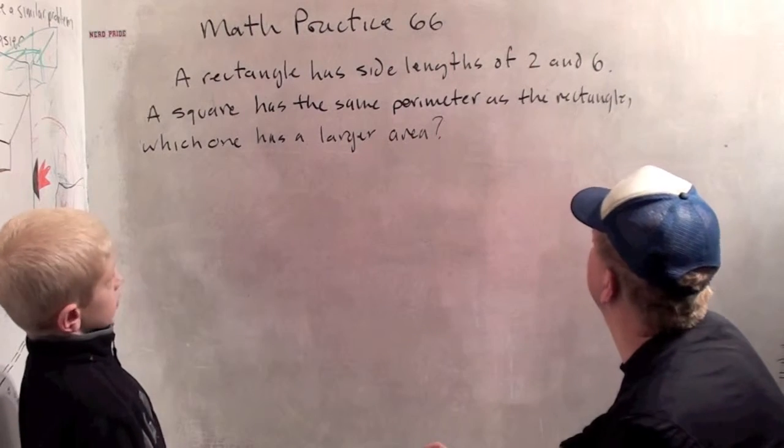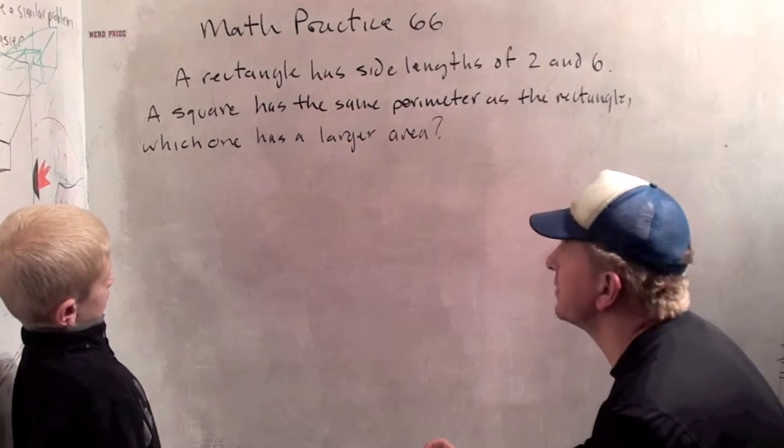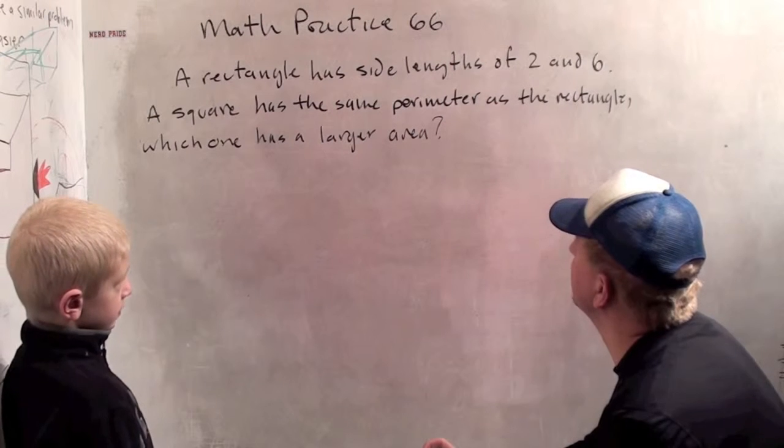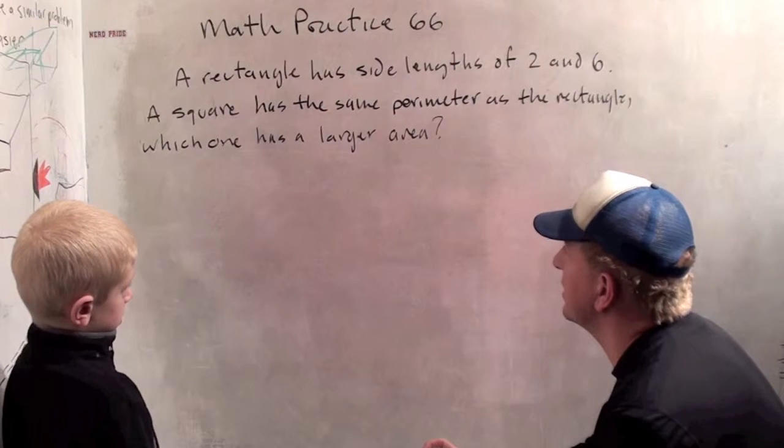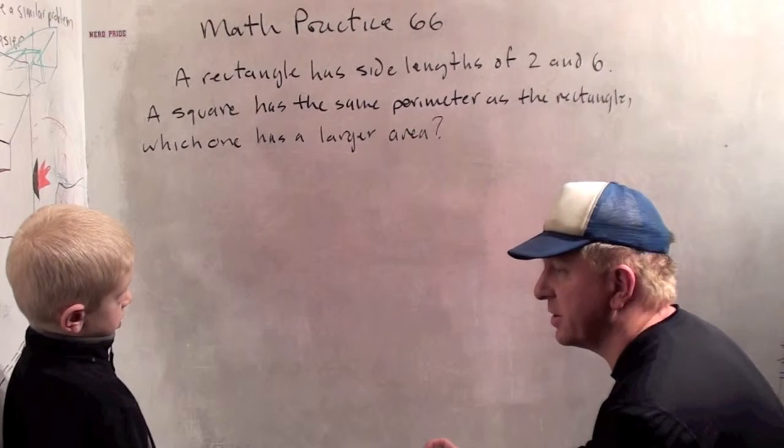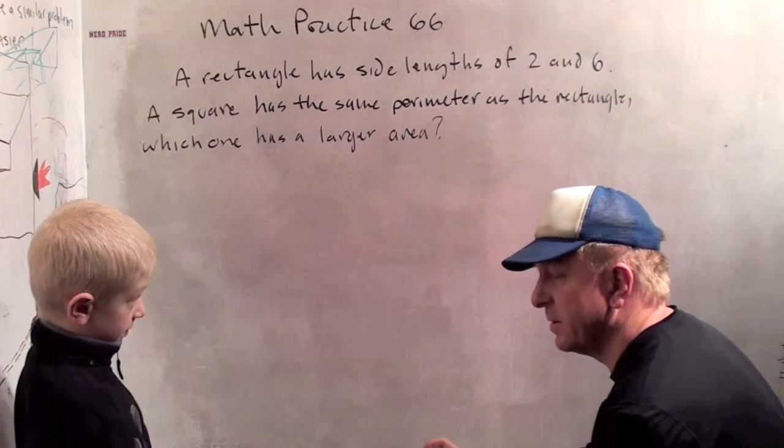A rectangle has side lengths of 2 and 6. A square has the same perimeter as the rectangle. Which has a larger area? Which one has a larger area, the square or the rectangle?